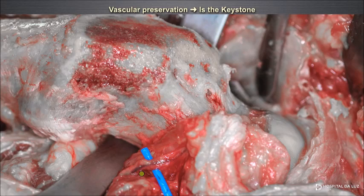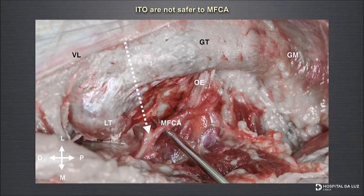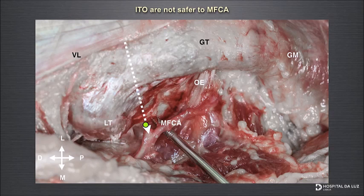If you think this is more dangerous than performing an intertrochanteric osteotomy, look at this cadaver picture. This is the intertrochanteric cut exiting at the medial part of the proximal femur, and as you can see, it hits directly the deep branch of the medial circumflex artery — and there you have no visual control because normally the quadratus femoris is attached in that area.